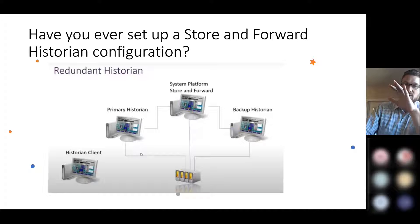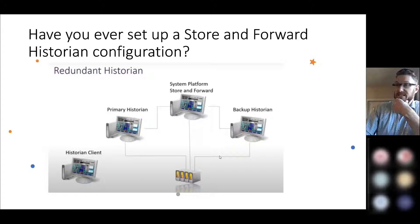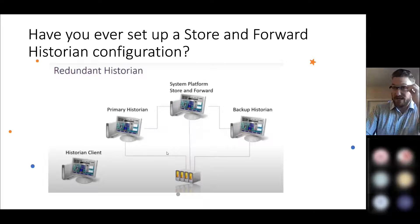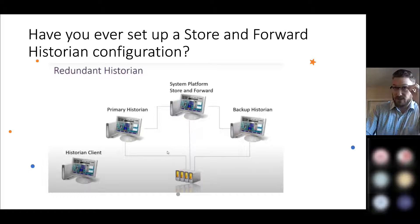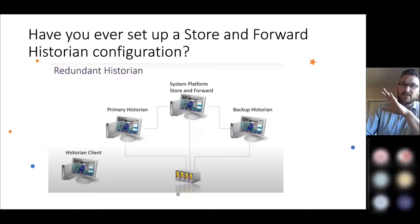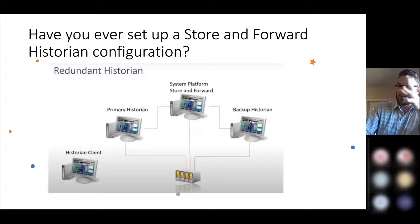If you remove those two connections in your head for simplicity's sake, it'll help with the explanation, because those two connections are not even needed and they make the explanation more complicated. So essentially, imagine your PLC is sending data to your System Platform PC, which is then sending data to your Historian PCs.